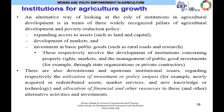An alternative way of looking at the role of institutions in agricultural development is through three widely recognized pillars of agricultural development and poverty reduction policies: A) expanding access to assets such as land and capital; B) development of markets; and C) investment in basic goods such as rural roads and research. These involve the development of institutions concerning property rights, development of markets, and management of public good investments — for example, through state-owned organizations or private contractors. There are also downstream and upstream institutional issues regarding the utilization of investment or policy outputs, such as newly acquired assets, market services, or new technology.